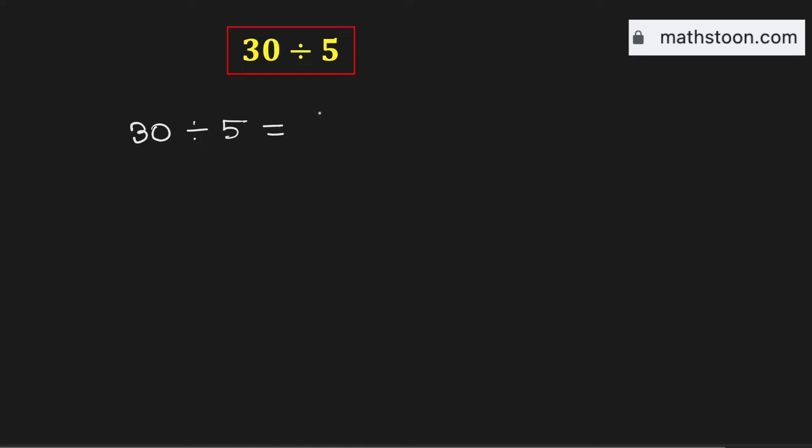We know that this division can be written as a fraction 30 over 5. Now we will write 30 as 5 times 6 and we have 5 in the denominator.